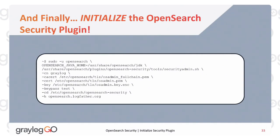Here we go — we're going to initialize the OpenSearch security plugin. This is the securityadmin.sh script that ships with the OpenSearch security plugin. We need to run the command as the OpenSearch user — that's why the 'sudo -u'. We set the OpenSearch Java home path inline as an environment variable because your shell most likely doesn't know where the OpenSearch Java binaries are. The CN flag stands for cluster name — conveniently confusing when talking about common names in certificates, but two different things.